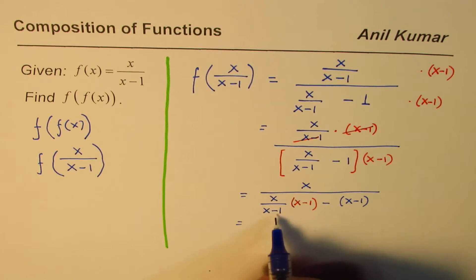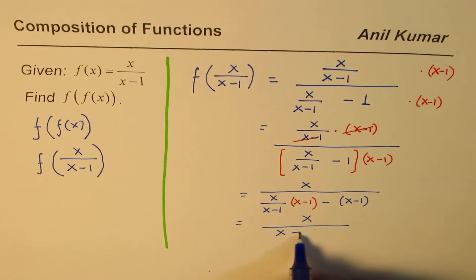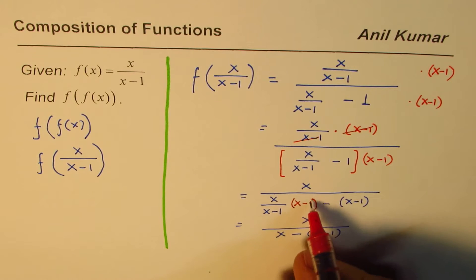Now again, these two cancel out. So we have x over x minus x minus 1. So this again cancels out.